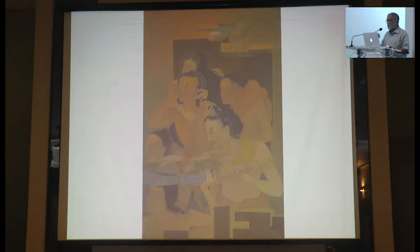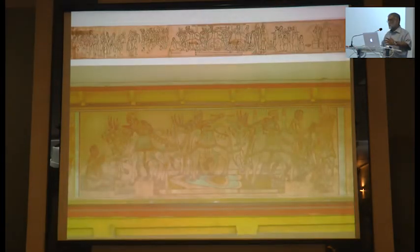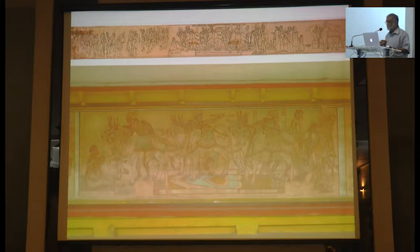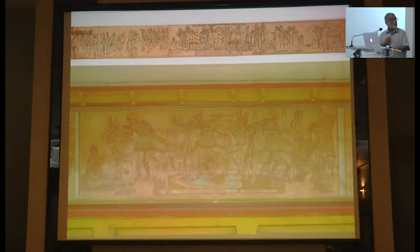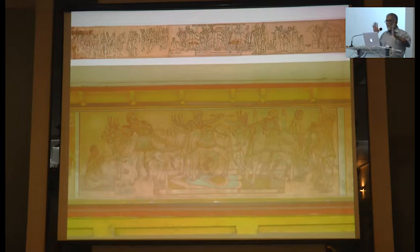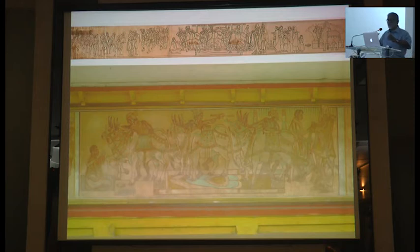Tagore invited Nandalal to take charge of his art school in Shantiniketan. Once he reached there, he changed his attitude — how an artist can really participate in the nationalist project. An artist can participate by properly creating a new kind of history painting where contemporary events would be monumentalized, iconized, and so on. There is a drawing of an entire mural he did, and in the center the detail of that central panel, which celebrates the ceremony Tagore started in Shantiniketan of a ceremonial ploughing — marking agriculture as an important part of Indian social life.